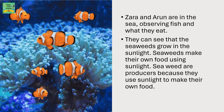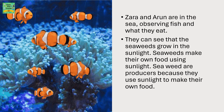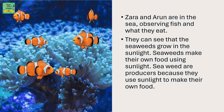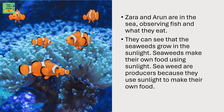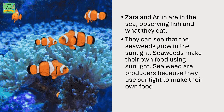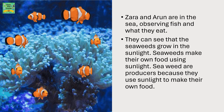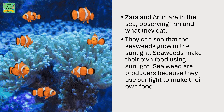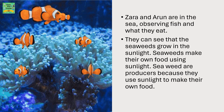Zara and Arun are in the sea, observing fish and what they eat. They can see that the seaweeds grow in the sunlight. Seaweeds make their own food using sunlight. Seaweeds are producers because they use sunlight to make their own food.